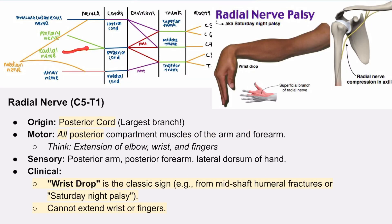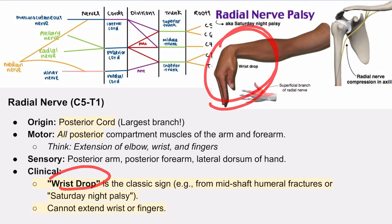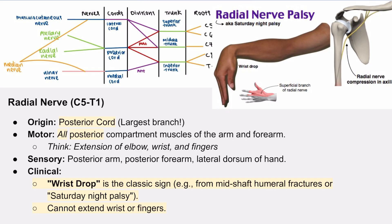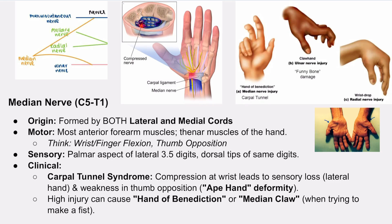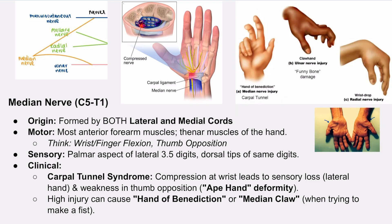The radial nerve is the largest branch of the posterior cord and controls all your extensors in the arm and forearm. Its most famous injury presentation is wrist drop, where the patient cannot extend their wrist or fingers. Common causes include mid-shaft humeral fractures or compression injuries like Saturday night palsy. The median nerve is unique as it is formed by both the lateral and medial cords. It's famously involved in carpal tunnel syndrome at the wrist, leading to sensory loss in the lateral hand and the classic ape hand deformity. For higher injuries, examiners love to ask about the hand of benediction or median claw when a patient tries to make a fist.